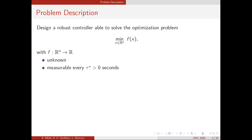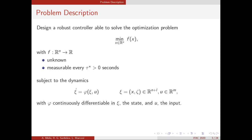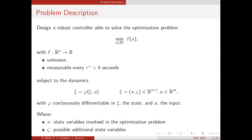The problem we tackled in this paper was the design of a robust controller able to solve an optimization problem in which the cost function f is assumed to be unknown and measurable every tau seconds. This optimization problem is considered subject to the following dynamics, in which the state C is composed by the optimization variable x and some possible additional states zeta, all controlled by the input u.